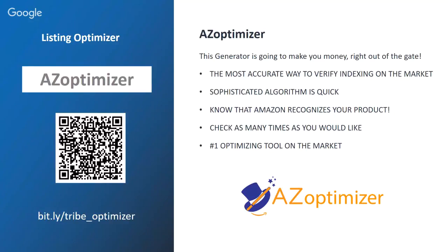The AZ Optimizer has an indexing checker. Once your listing is up and running, you can check which keywords have been indexed by the A9 algorithm and which haven't. You can then manipulate your listing to ensure un-indexed keywords get moved up — if a keyword isn't being indexed, put it in the title or bullet points. Note that the description does not get indexed.